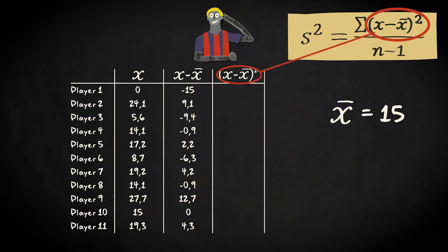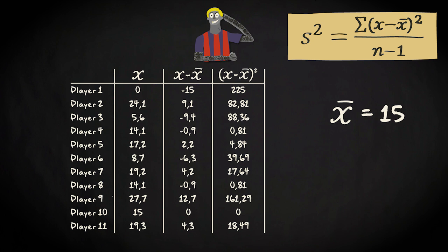That's the next step. We square all these computed values. So, minus 15 squared is minus 15 times minus 15 is 225. We do that for all the other observations as well. According to the formula, we now have to add up all these values. After all, this is the sum up symbol.